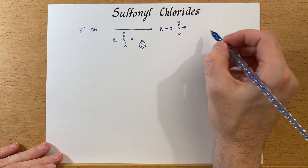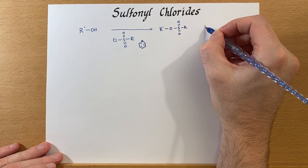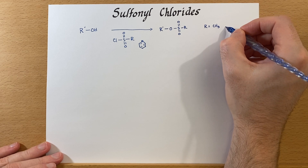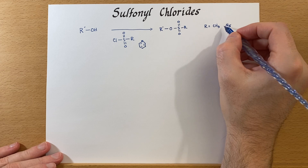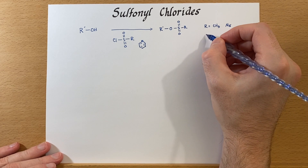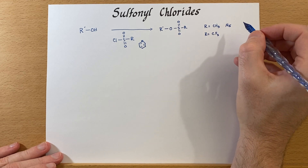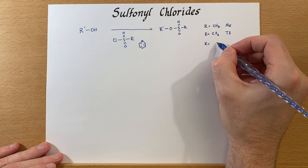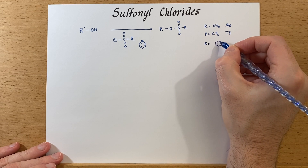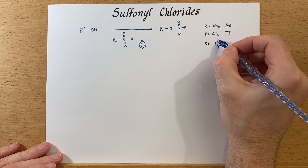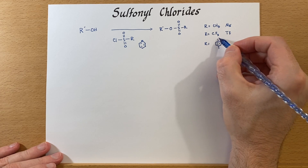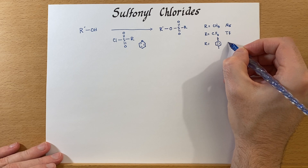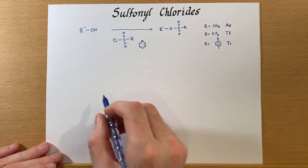Remember, these R groups can be different things. If it's a methyl group, then it's a mesylate, abbreviated MS. If it is CF₃, then it's the triflate, abbreviated TF. And if R equals basically a toluene group — the rest of it substituted on the sulfur — this is a tosylate. So these all make excellent leaving groups.